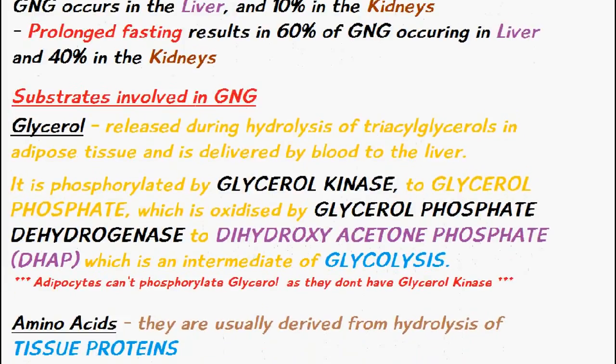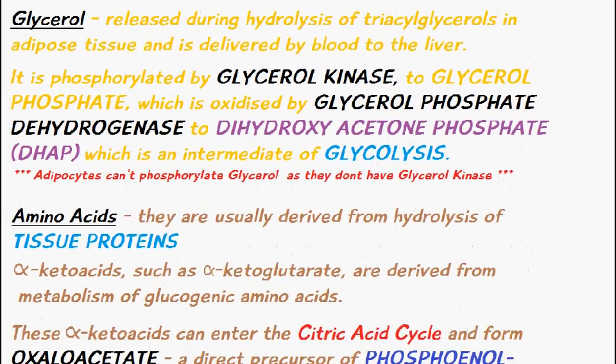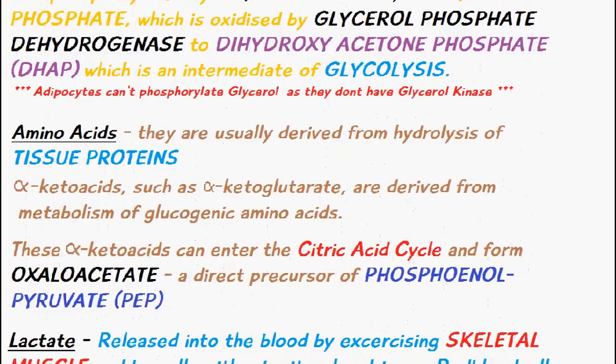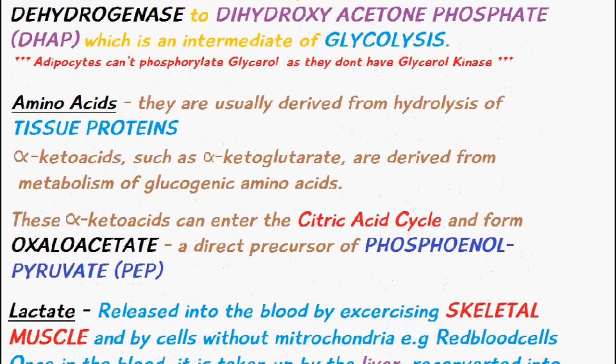The second substrate involved is amino acids, and they are usually derived from the hydrolysis of tissue proteins. Alpha keto acids like alpha-ketoglutarate are derived from the metabolism of glucogenic amino acids. These alpha keto acids can enter the citric acid cycle and form oxaloacetate, which is a direct precursor of phosphoenolpyruvate.